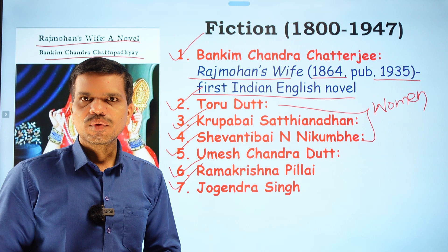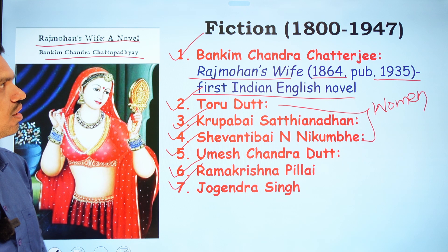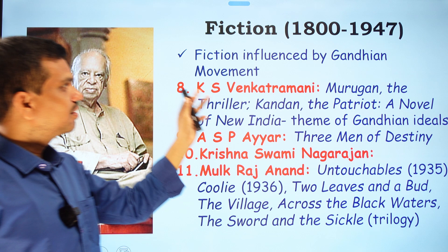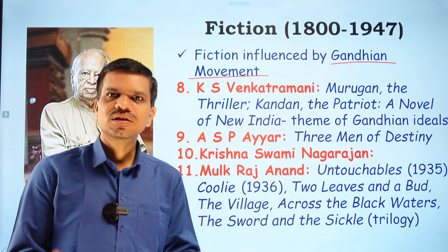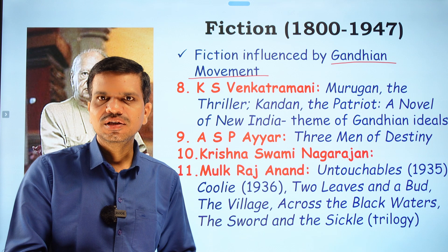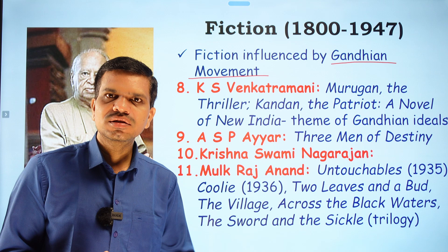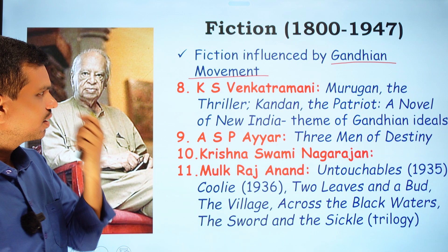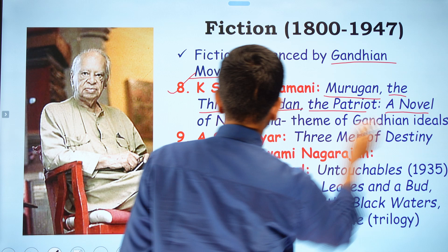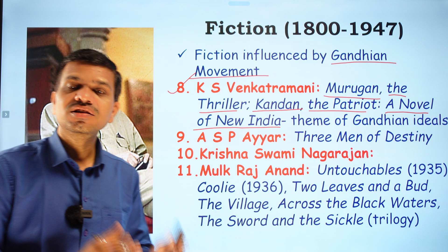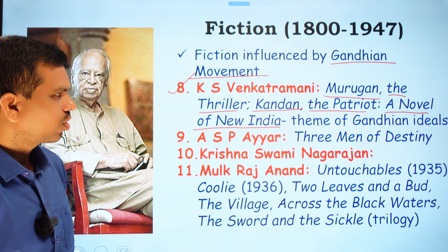Fiction in this period was heavily influenced by the Gandhian movement — the social, economic, and cultural changes Gandhi inspired. Writers observed Gandhi's struggle for India's freedom closely. K.S. Venkatramani, for example, wrote novels such as Murugan the Tiller, Kandan the Patriot: A Novel of New India, all reflecting Gandhian idealism.